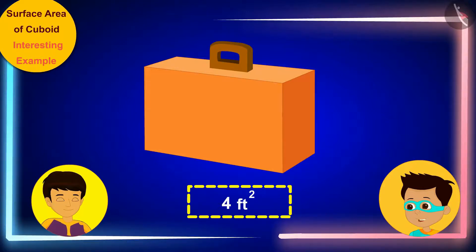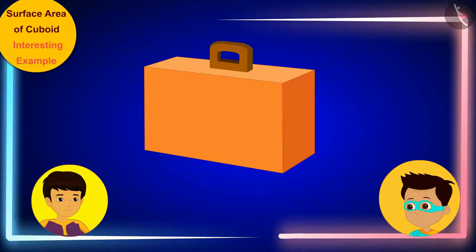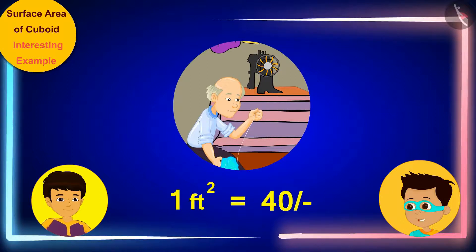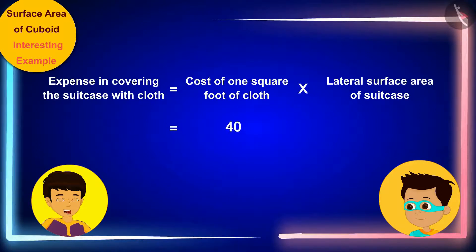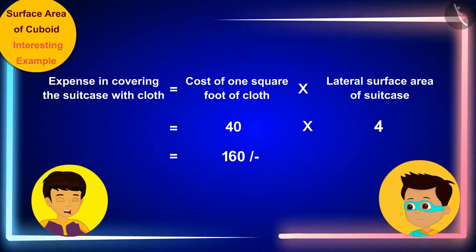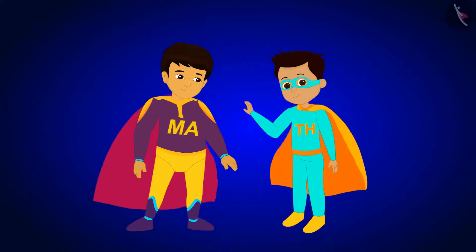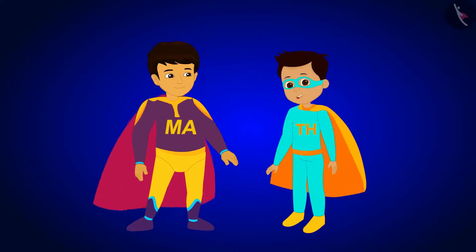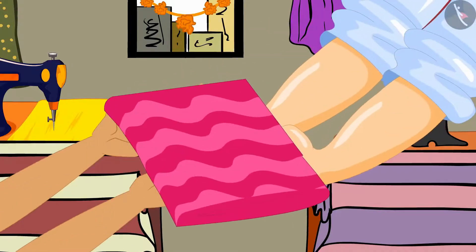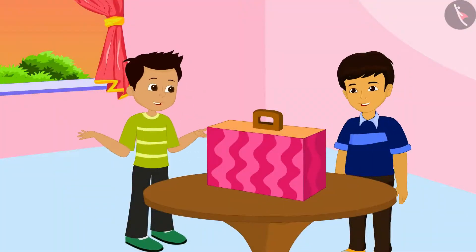Well done! But it will cost you a lot of money to buy the cloth. The tailor sells 1 square foot of cloth for Rs. 40. Rs. 40 for a square foot of cloth and I need 4 square feet of cloth for the cover of the suitcase. That means I would need a total of Rs. 40 times 4, which is Rs. 160. Mother has given me Rs. 200, so I will be able to buy this cloth. The two friends bought 4 square feet of cloth from the tailor and got a beautiful cover stitched for Manas' suitcase.